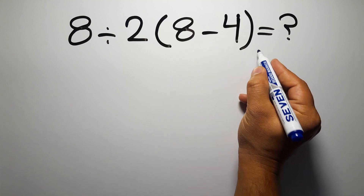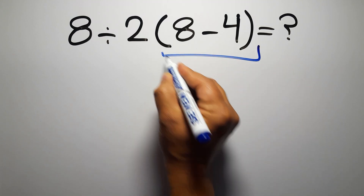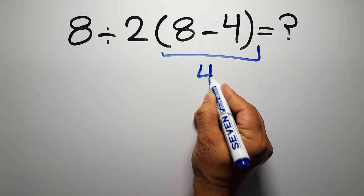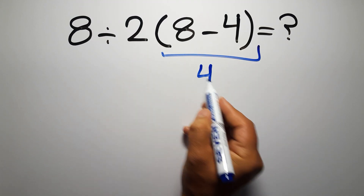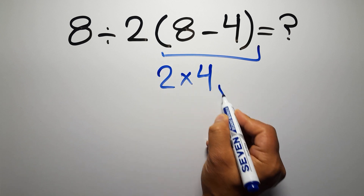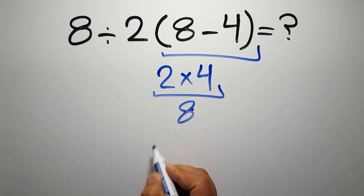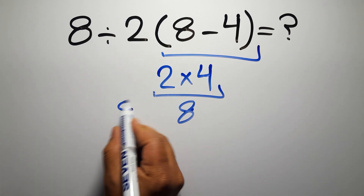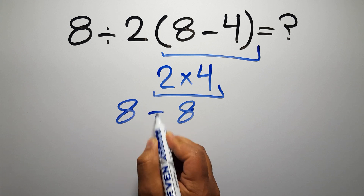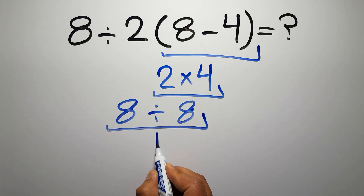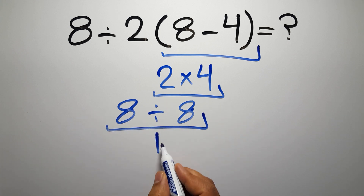8 minus 4 gives us 4, and 2 times 4 equals 8, so 8 divided by 8 gives us 1. But this answer is not correct.